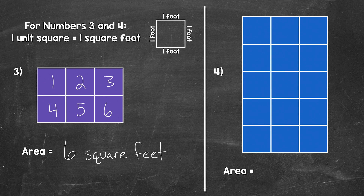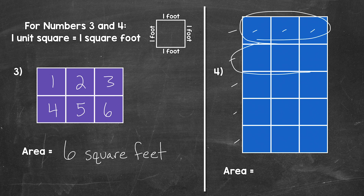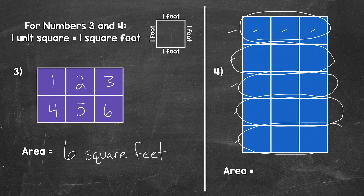Moving on to number four, let's find the area. Can we think of a way to figure out how many square feet we have here without counting each individual square? Well, how about something like this? We have one, two, three, four, five rows — and remember, rows go horizontally, so side to side. And then if we look at each row, we have one, two, three squares. So an option here is to skip count by three: three, six, nine, 12, 15. So the area is 15 square feet.